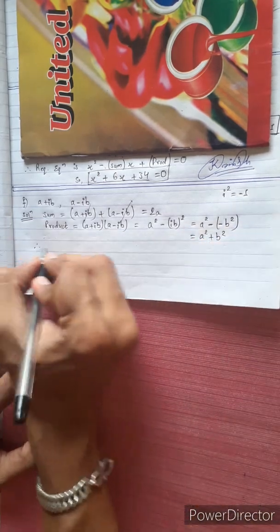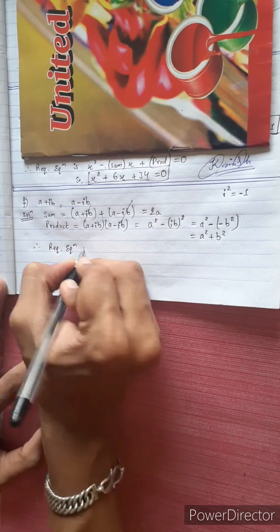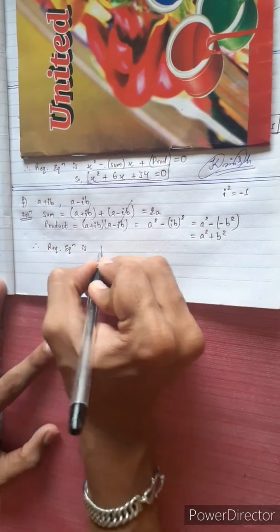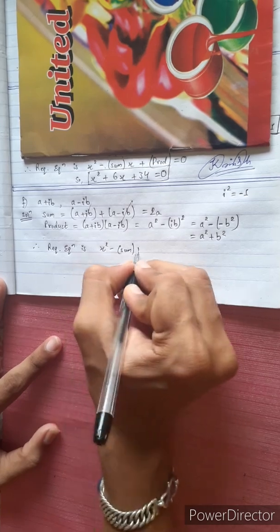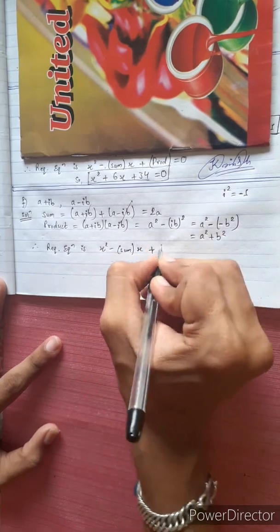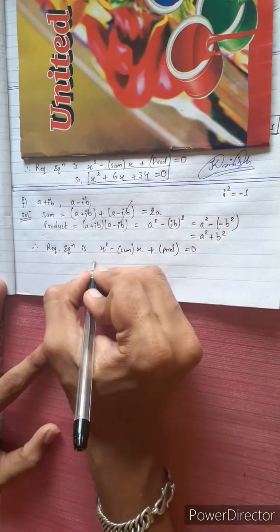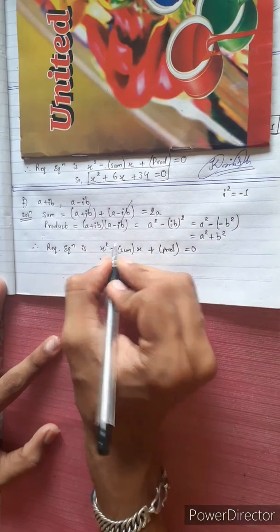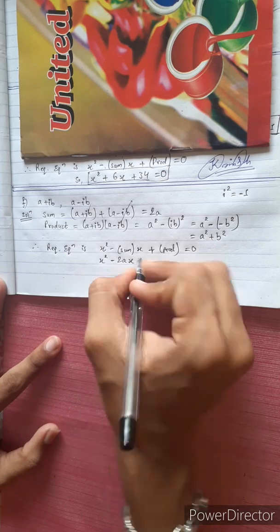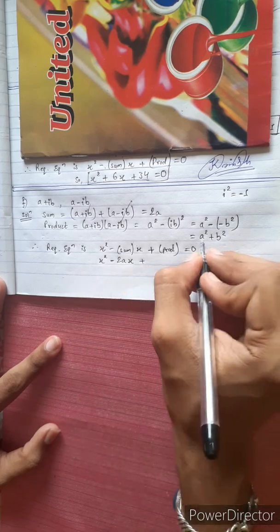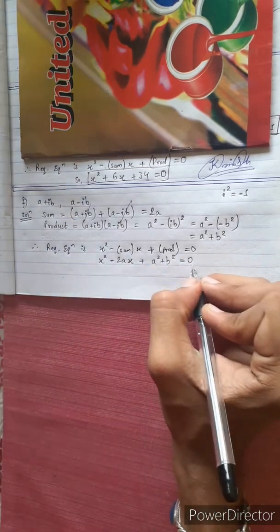Therefore, the required equation is x² - (sum of roots)x + (product of roots) = 0, which gives x² - 2ax + (a² + b²) = 0.